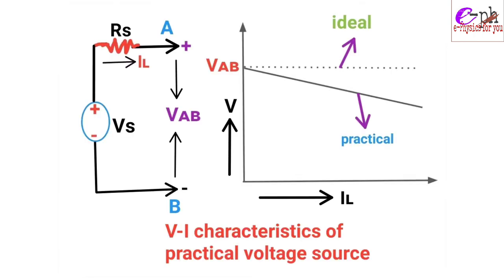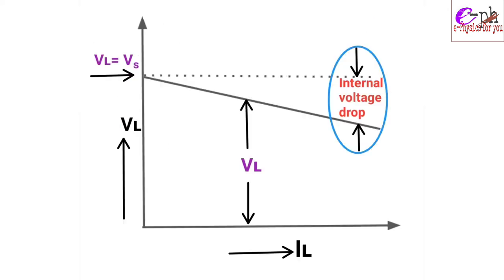This figure shows the circuit diagram and V-I characteristics of a practical voltage source, where terminal voltage varies with load current. The dotted line indicates the ideal voltage source and the solid line indicates the practical voltage source, which deviates from the ideal. The gap between the two lines indicates the internal voltage drop of the practical voltage source.